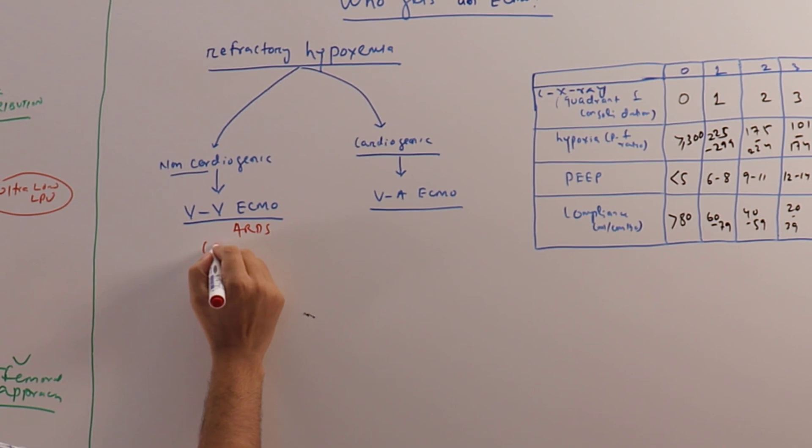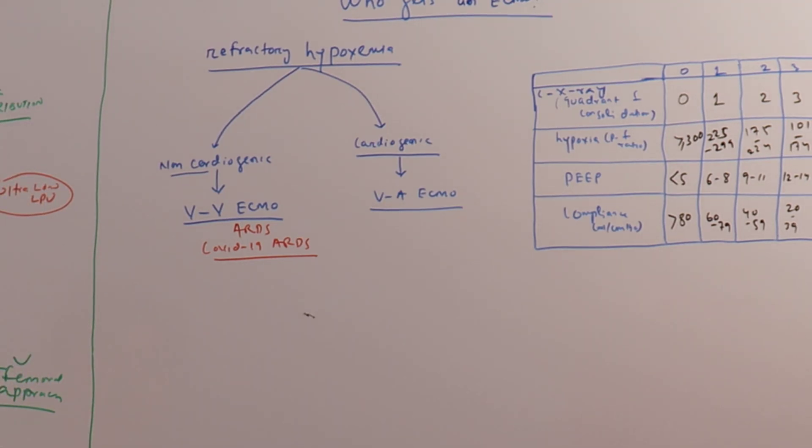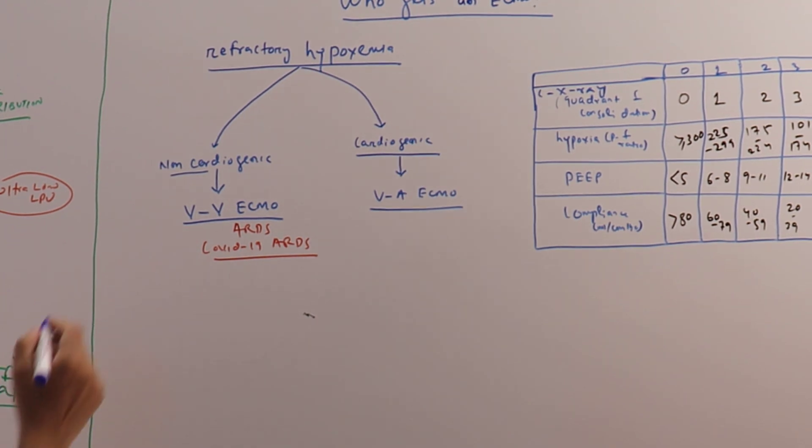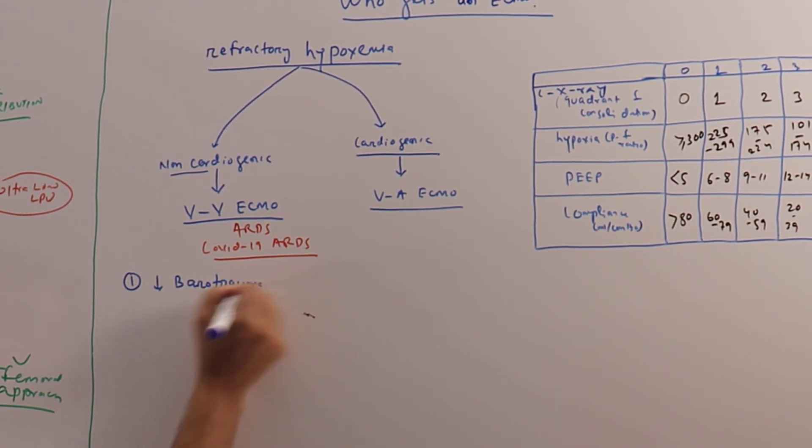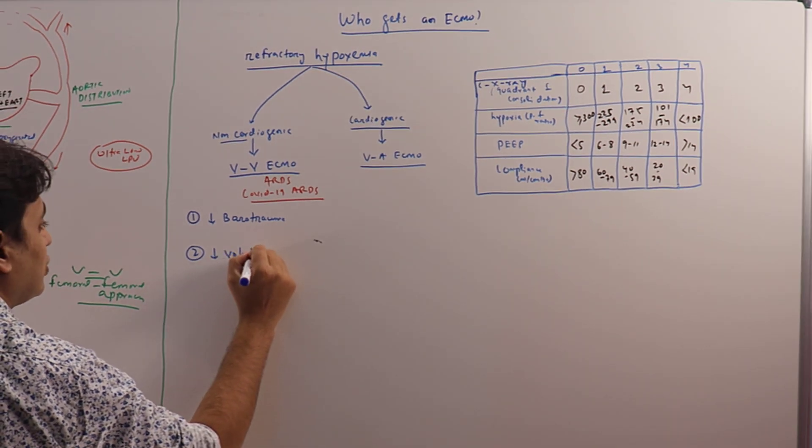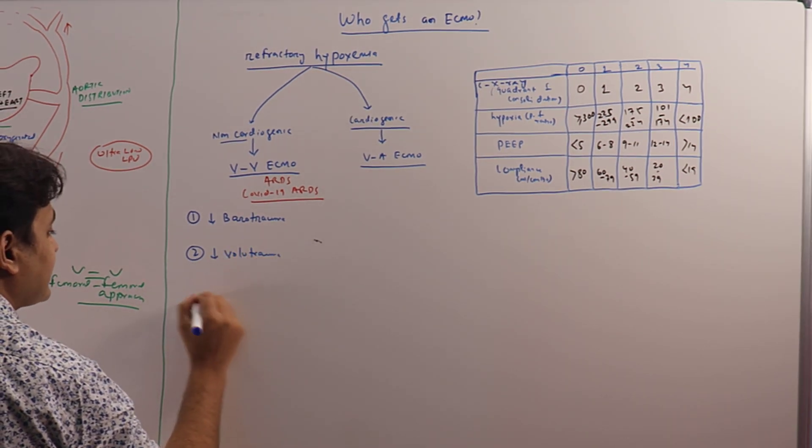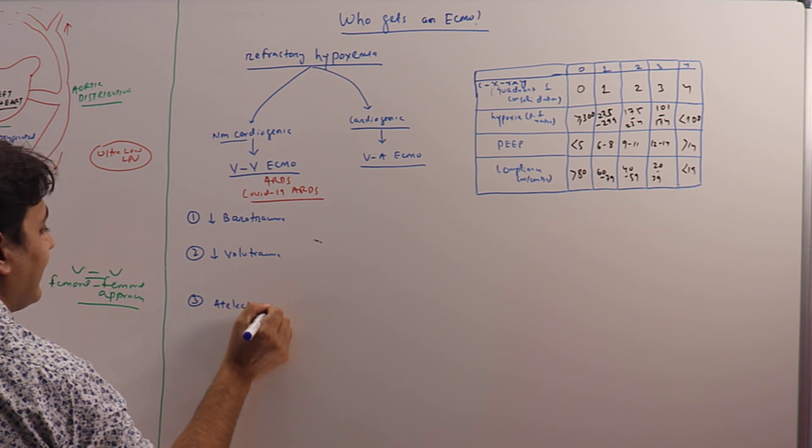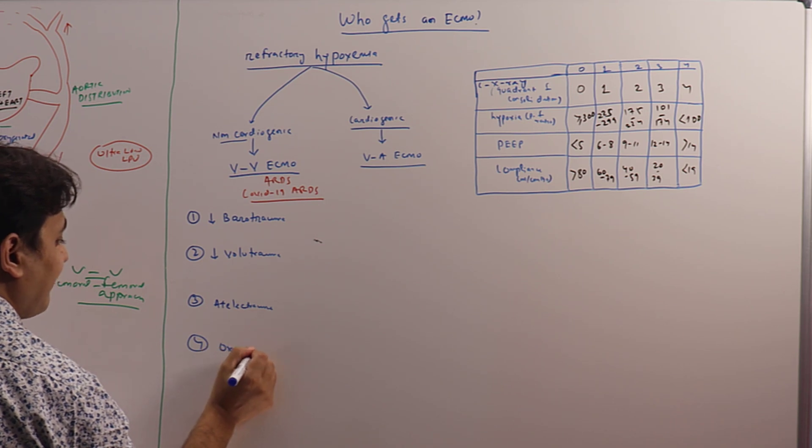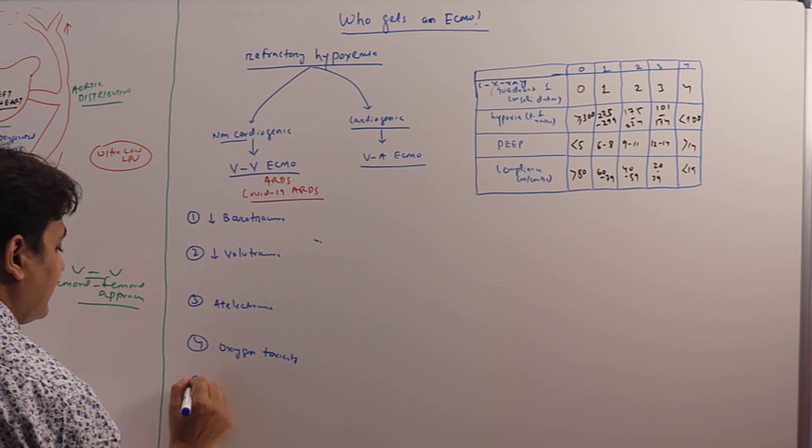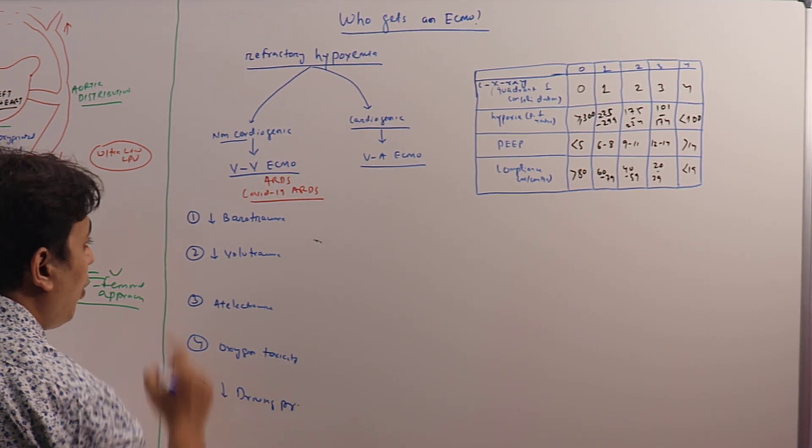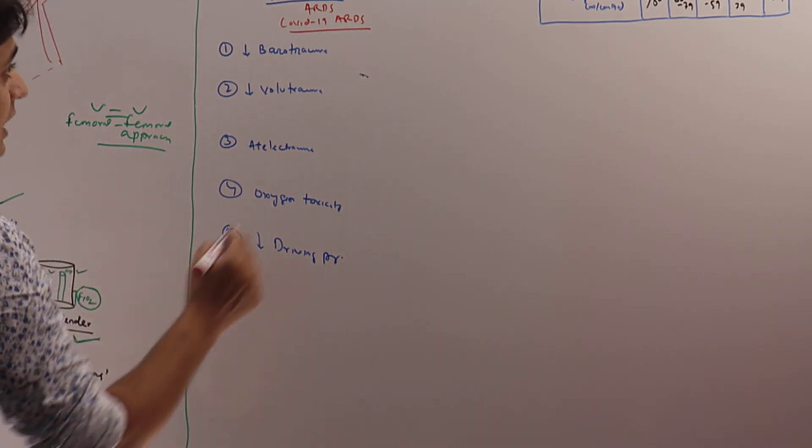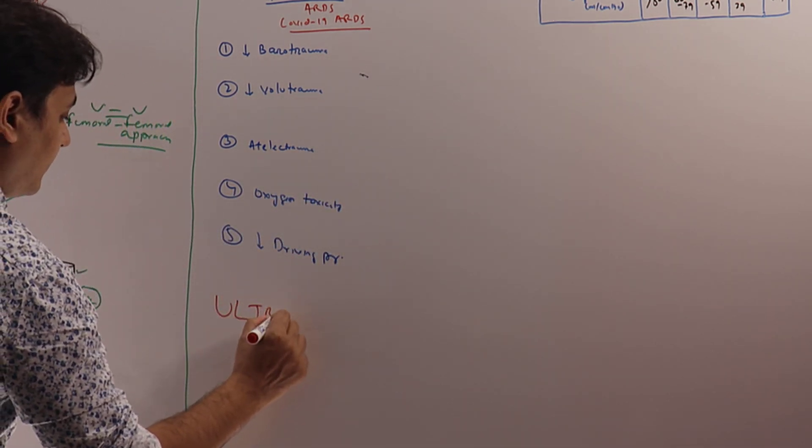So how does ECMO help an ARDS patient? It prevents barotrauma, it prevents volutrauma to the lung, it prevents atelectrauma, it prevents oxygen toxicity, and it decreases the driving pressure, which improves mortality. All these are possible because we can give our patient what is called ultra-low lung protective ventilation.